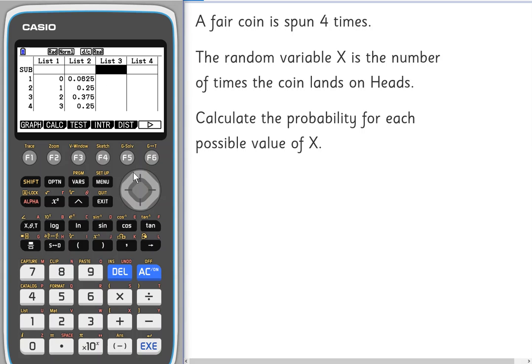We can do that quickly and easily using these lists. So to start with, in list 3 we're going to put the product of the value of X multiplied by the associated probability. So 0 times 0.0625, 1 times 0.25 and so on.